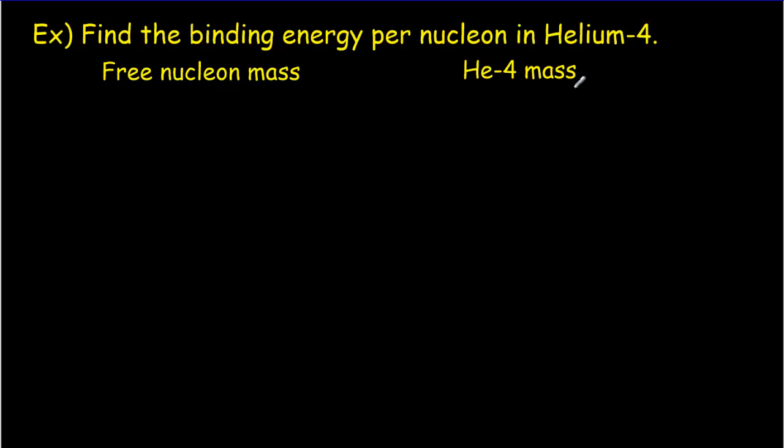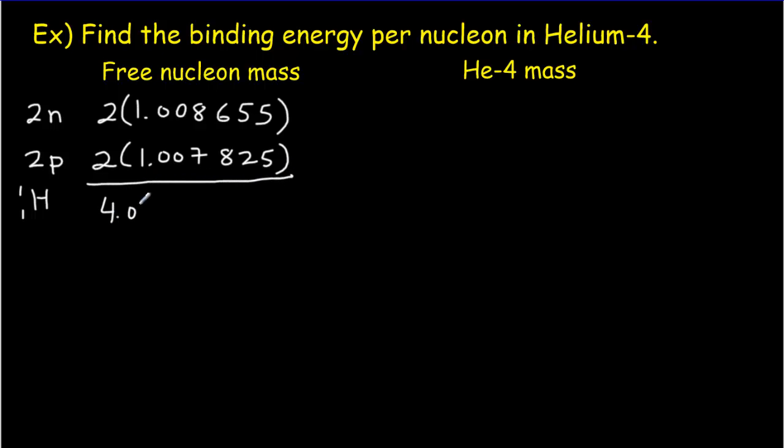A helium-4 atom is going to have two neutrons and two protons in it. So my two neutrons and two protons. The neutron mass was 1.008655 in atomic mass units. We've got to multiply that by two because we've got two of them. Now for the protons, what you do is you consider the hydrogen 11, and we've got the hydrogen 11 nucleus is simply a proton. So that means we've got two of these masses of 1.007825, and if we add all that up, we get a value of 4.03296 atomic mass units. So that's the free nucleon mass.